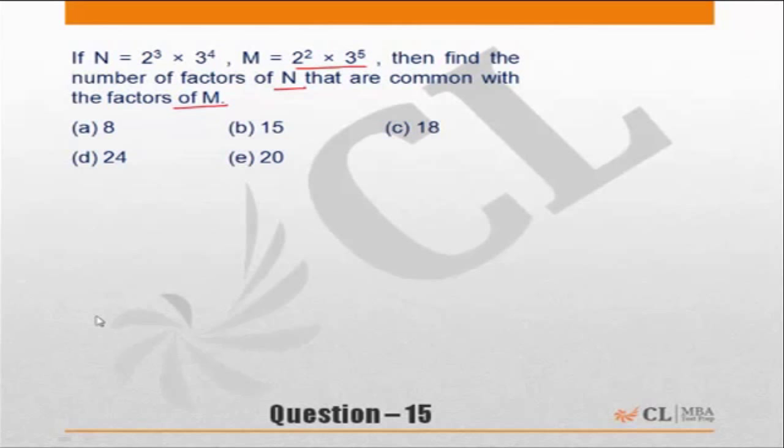Now in this question, N is equal to 2 cube into 3 to power 4 and M is equal to 2 square into 3 to power 5. How many factors are there? The number of factors for N will be 4 into 5, which is 20. Here will be 3 into 6, which is 18. So my starting point is my answer has to be less than 18.